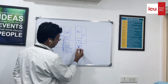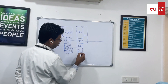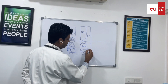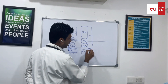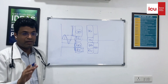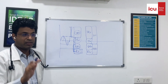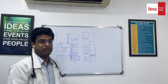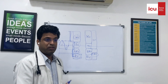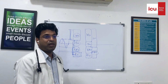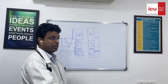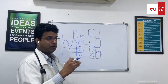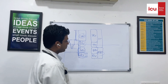If I combine expiratory reserve volume plus residual volume, this is functional residual capacity. This term will be very much used in ventilation, in COPD and asthma, where we talk about increasing or decreasing the functional residual capacity.